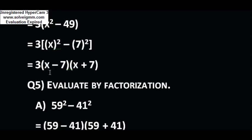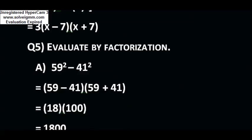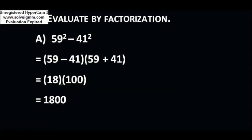According to identity number 3, a² - b² = (a - b)(a + b), where a = x and b = 7, so you can write (x - 7)(x + 7). Question number 4: evaluate by factorization 59² - 41². The first and last terms are perfect squares with a negative sign between them, so this is identity number 3. You write (59 - 41)(59 + 41) = 18 × 100 = 1800.